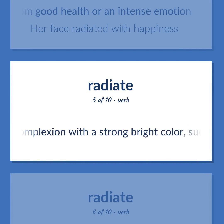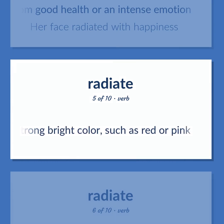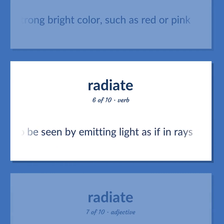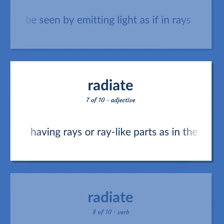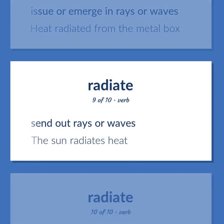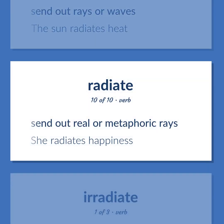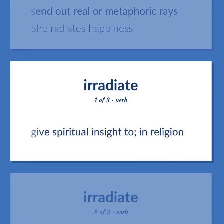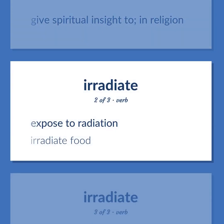Have a complexion with a strong bright color, such as red or pink. Cause to be seen by emitting light as if in rays. Having rays or ray-like parts, as in the flower heads of daisies. Issue or emerge in rays or waves — 'Heat radiated from the metal box.' Send out rays or waves — 'The sun radiates heat.' Send out real or metaphoric rays — 'She radiates happiness.' Give spiritual insight to, in religion. Expose to radiation — 'Irradiate food.' Cast rays of light upon.